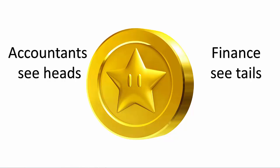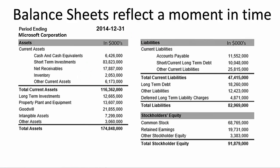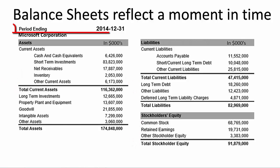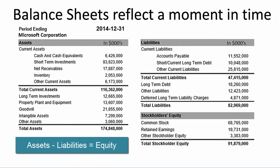Let's sensitize you by working through an example. Let's substitute a balance sheet of Microsoft Corporation for the coin for a moment. A balance sheet shows the value of assets, liabilities, and equity of a business at a specific point in time, often December 31st at midnight. It adds up all the various categories of assets, does the same for liabilities, and the difference represents the residual interest.